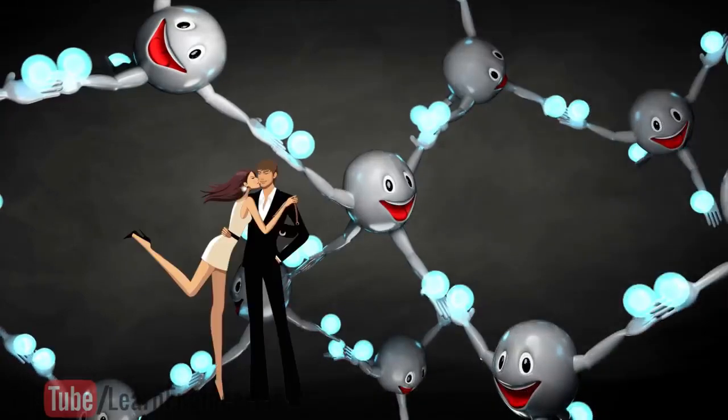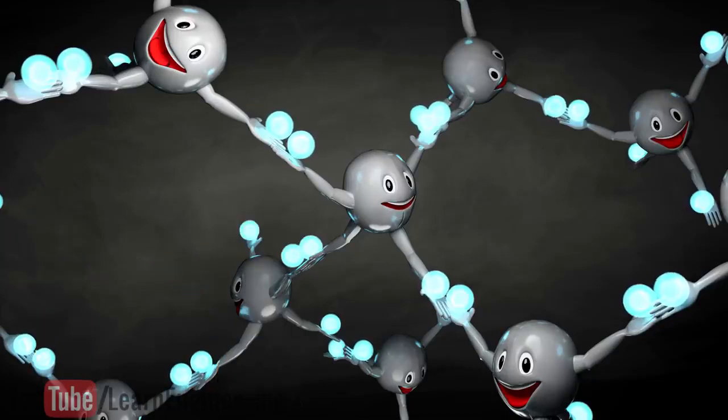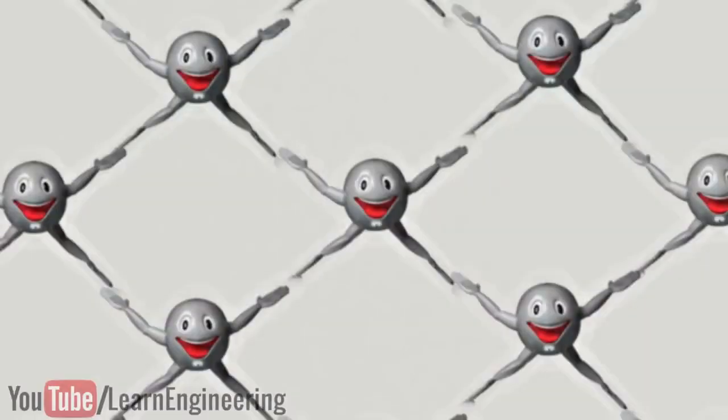When you are bonded with someone, you lose your freedom. Similarly, the electrons in the silicon structure also have no freedom of movement. To make the study easier, let's consider a 2D structure of the silicon crystals.